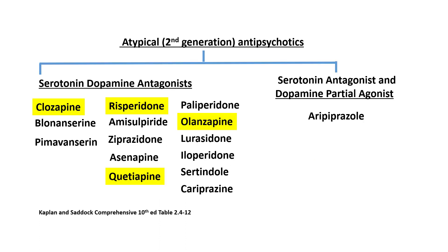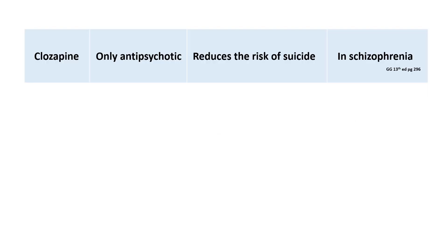The atypical or second-generation antipsychotics mainly include the serotonin-dopamine antagonists — drugs that block both D2 receptors and 5HT2A serotonin receptors in the dopaminergic pathways. The most important among these include clozapine, olanzapine, quetiapine, and risperidone. It is worth noting that clozapine is the only antipsychotic drug that reduces the risk of suicide in schizophrenia.